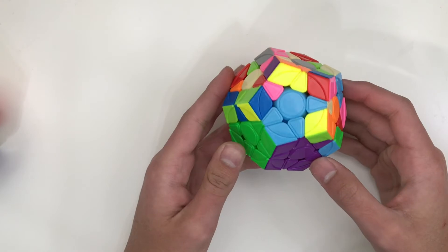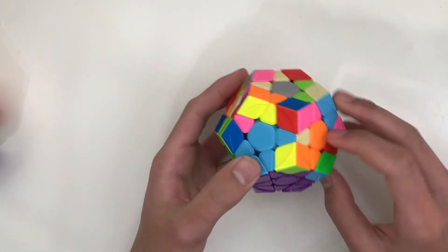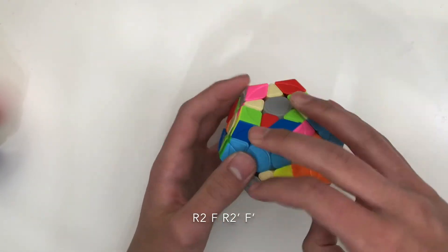Of course, this can be applied to S2L. For example, inserting this into here seems kind of crazy, but you can just do R2, F, R2', F'.